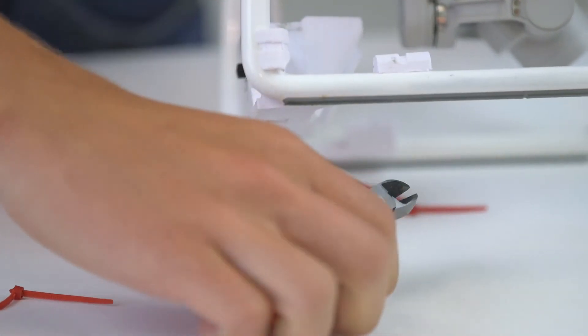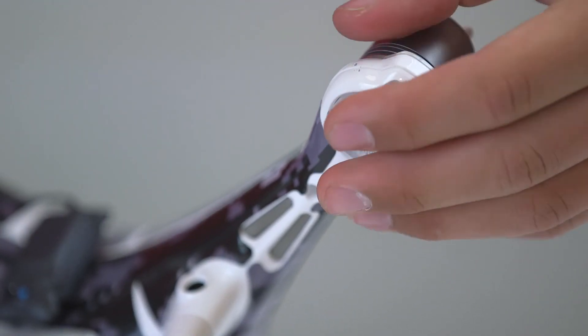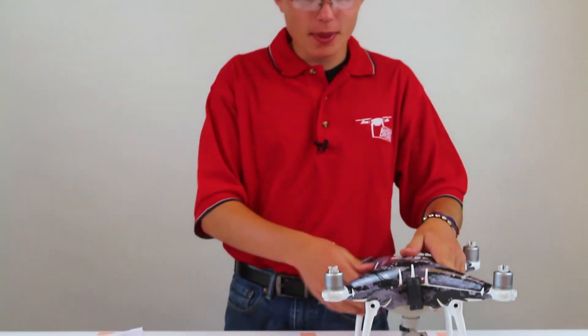It is not necessary to keep the siren on the drone at all times. To take the siren off, reverse the installation process. It is as simple as that. Happy Herding.